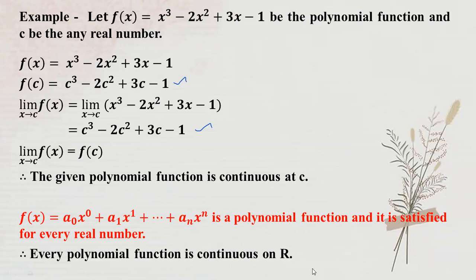A continuous function is a polynomial function. Continuous as a prime rule, continuous on an interval. We will have rational function as a polynomial function. Rational function is continuous as a prime rule, but map your domain.